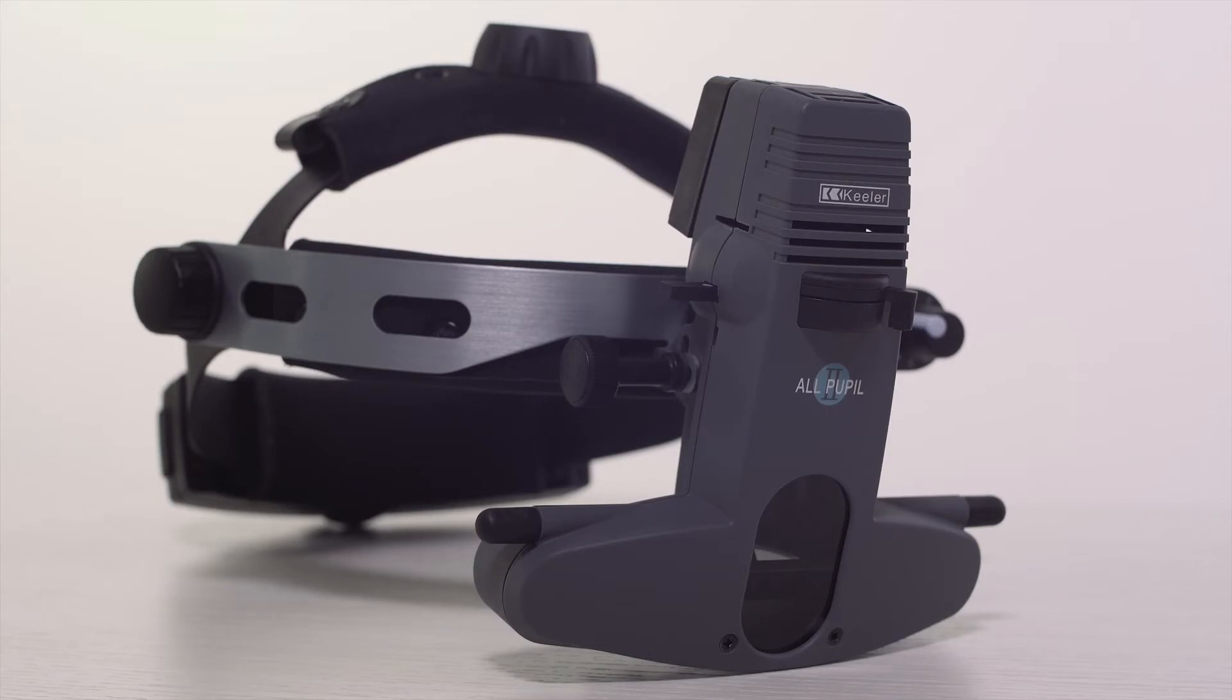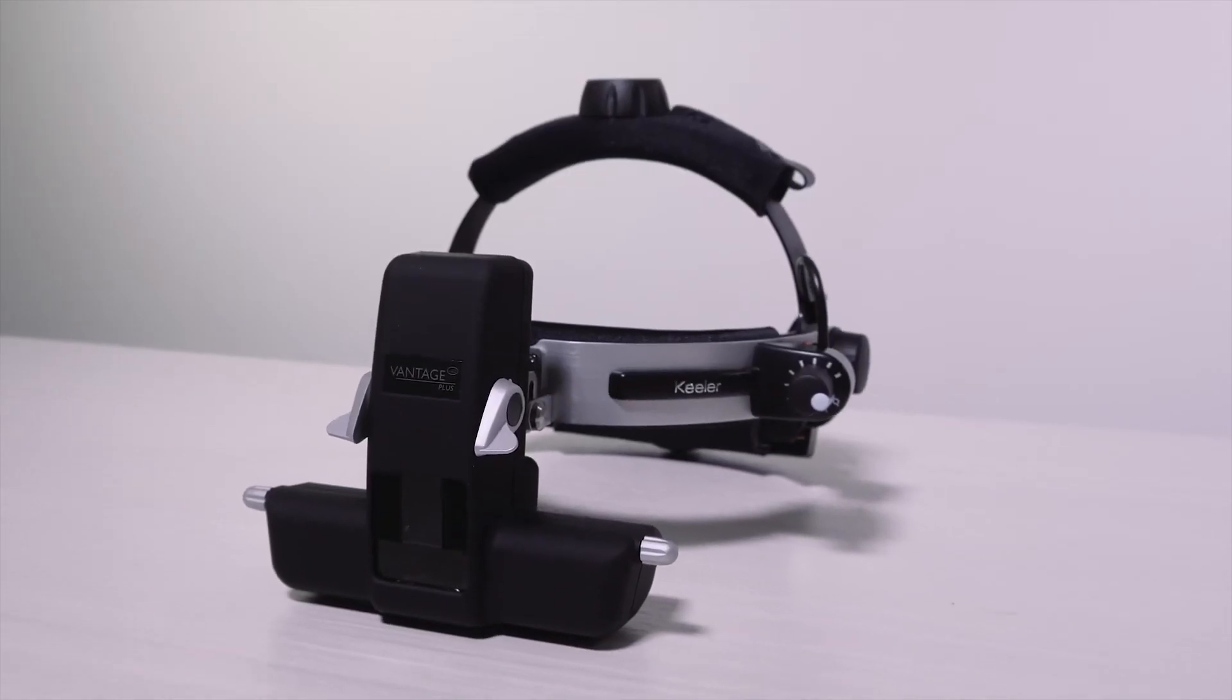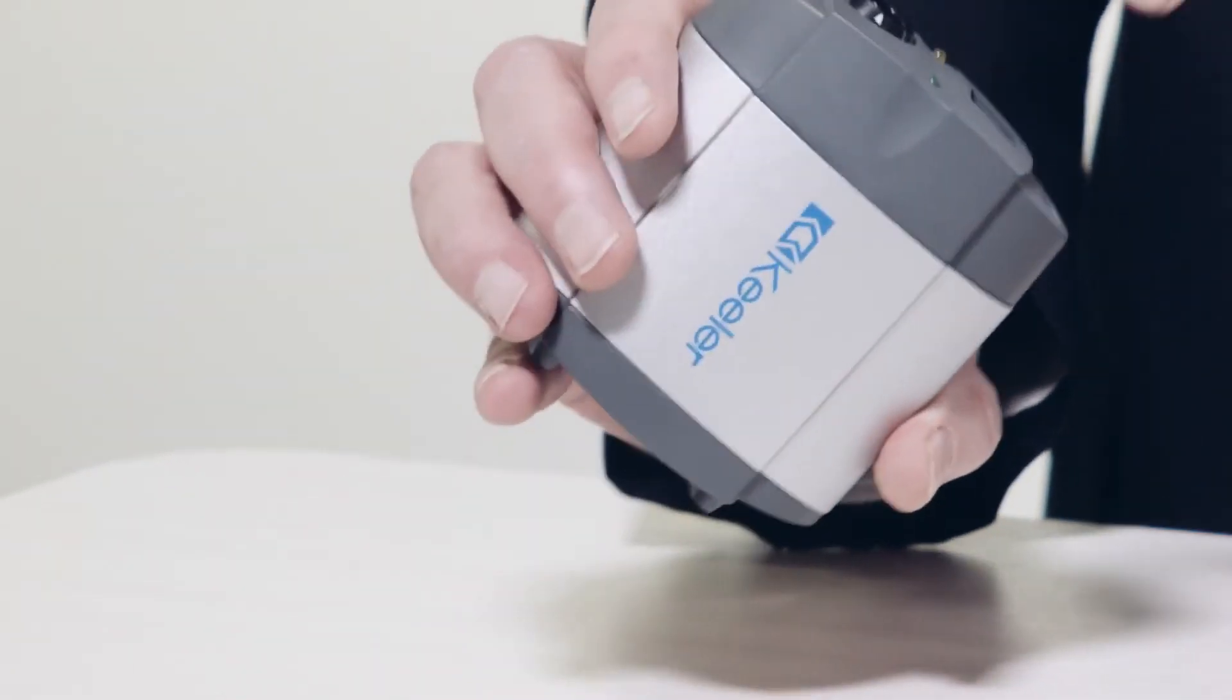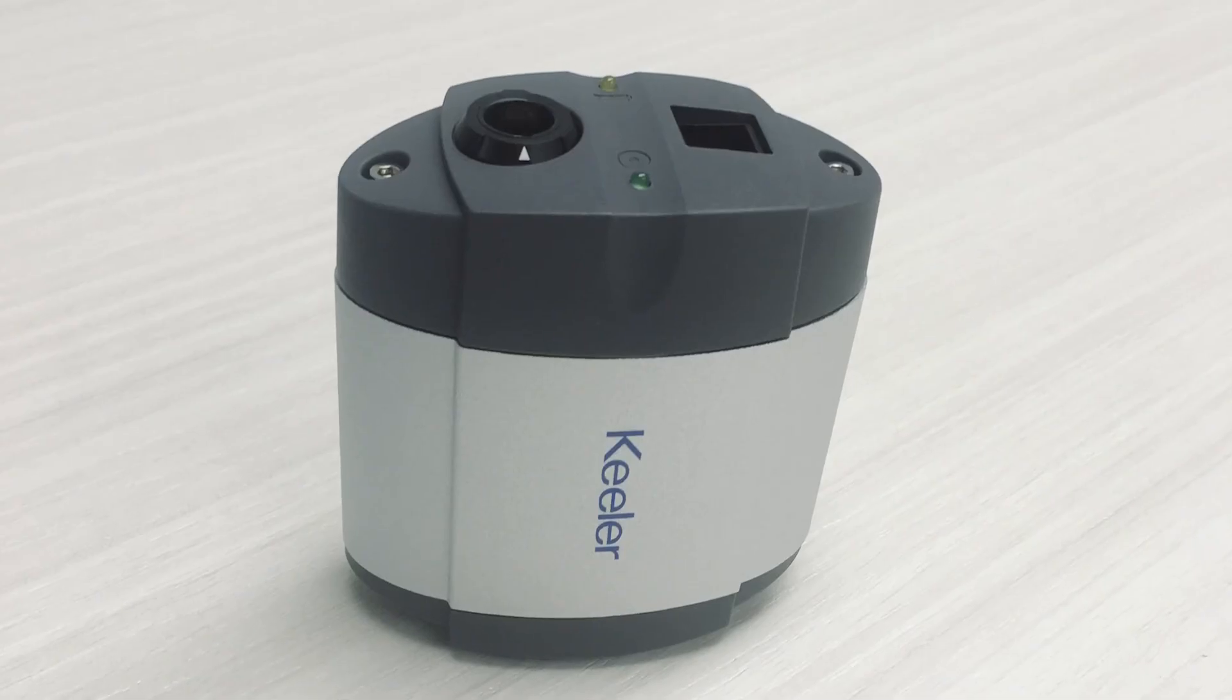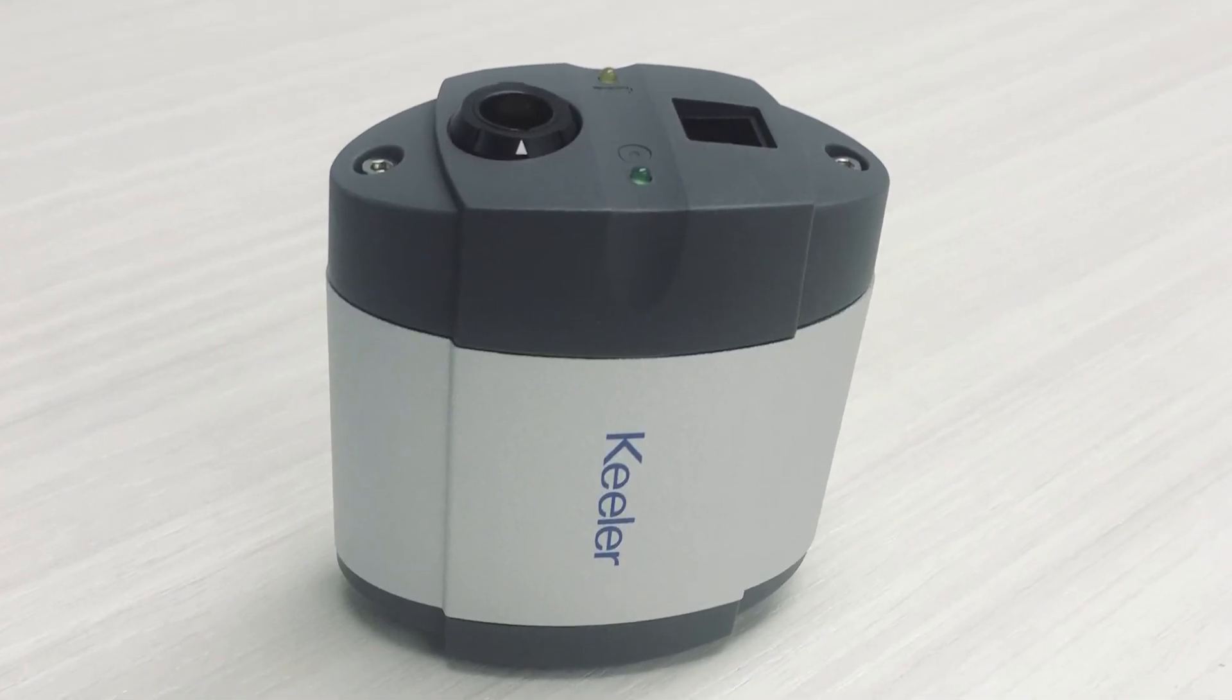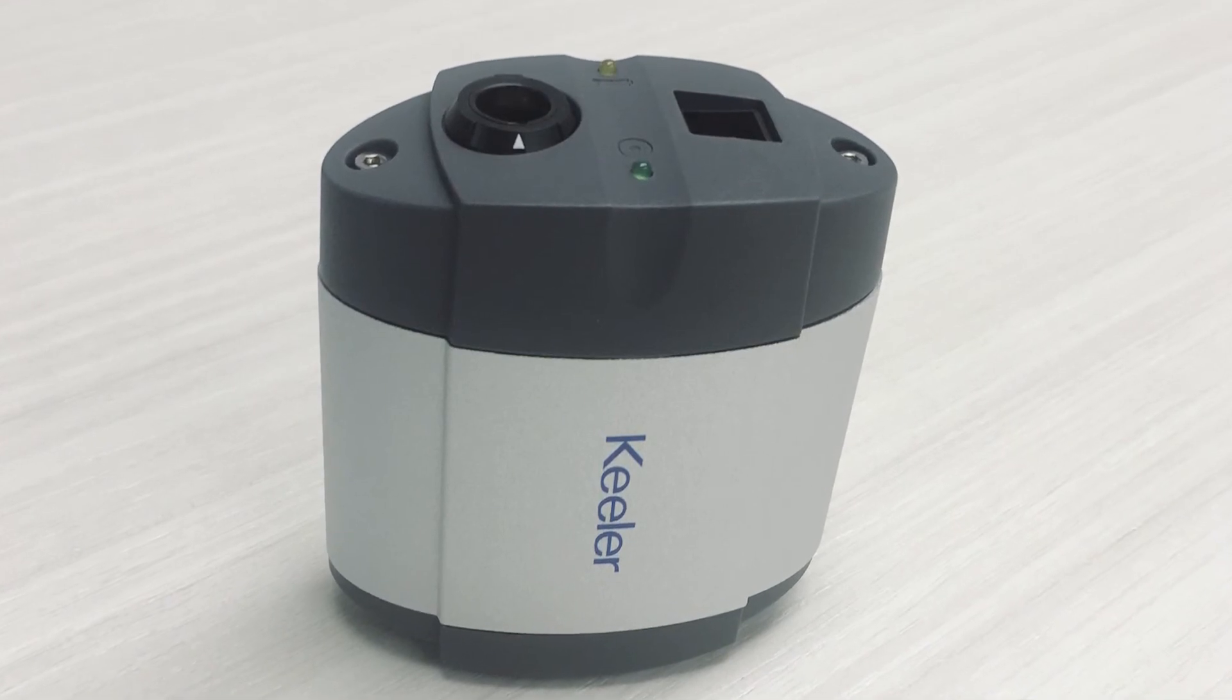All Pupil 2 or Vantage Plus wired units can be powered using the SmartPak for mobility. The metal hydride battery allows you hours of use before you need to recharge the battery. The SmartPak converts to a wall-pack system.